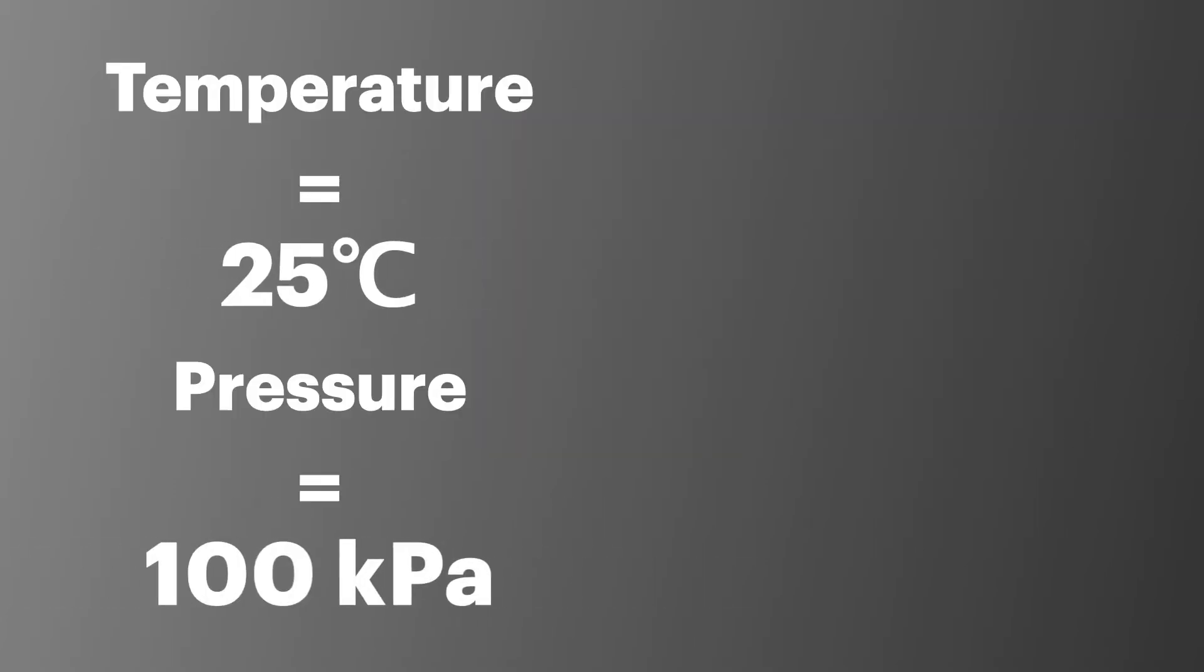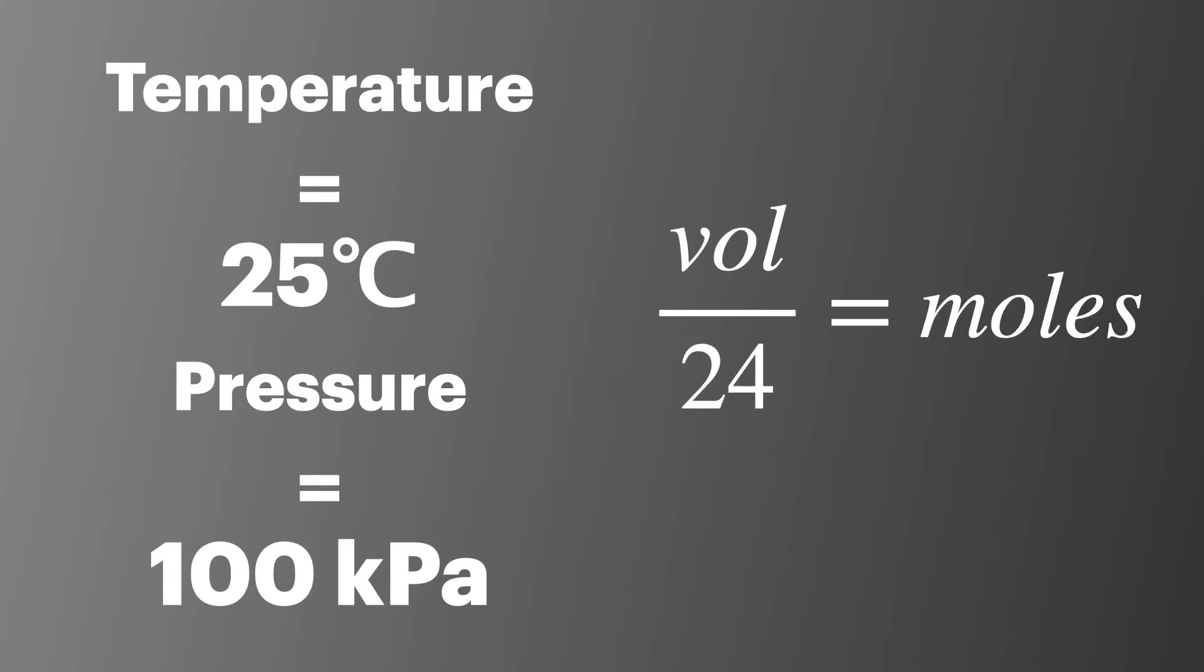So if the temperature is 25 degrees Celsius and the pressure is 100 kilopascals, then the number of moles can easily be calculated by dividing the volume of gas in decimeters by 24 to give the total number of moles of the gas present. This is particularly useful to remember if you're looking at the multiple choice questions at the end of paper 3. Using this information to make approximations can speed up finding the answer.